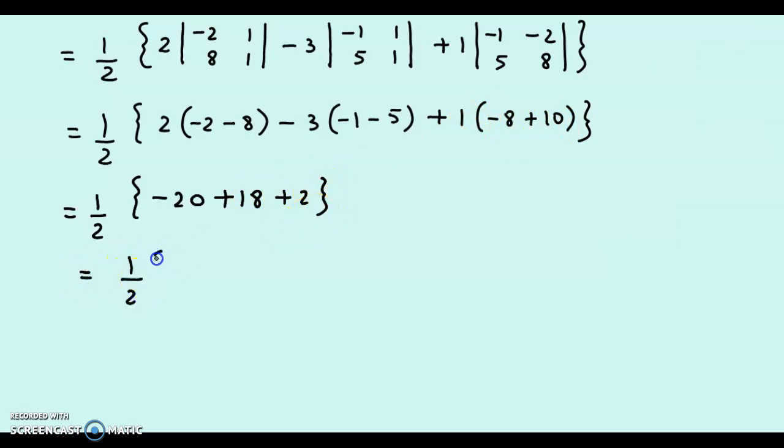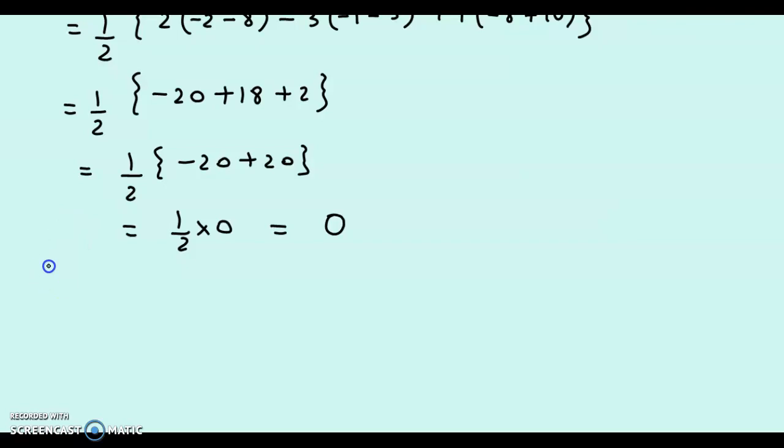What we have here is half into -20. And this total is +20. So, -20 plus 20, that's 0. So, the final answer is 0. The area of the triangle is 0.